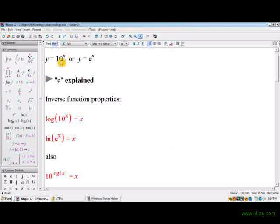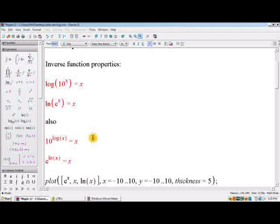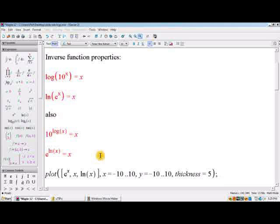So the inverse function to exponential is what we call a log function. So if you take 10 to the x and you plug it into its inverse function, you get back the argument x. Likewise, if you take e to the x and plug it into log base e, or a natural logarithm, you get back the argument x. Also, if you do it the other way around, if you first take the logarithm and then put it up in the exponent, again, you're going to get back the argument x. So you could view these things as sort of canceling each other out.